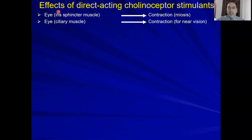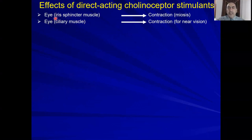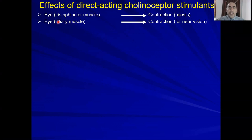The effects of direct-acting choline receptor stimulants — drugs that activate muscarinic receptors: In the eye, they cause contraction of the iris sphincter muscle, causing miosis — constriction of the pupil. On the ciliary muscle, they cause contraction to accommodate for near vision.